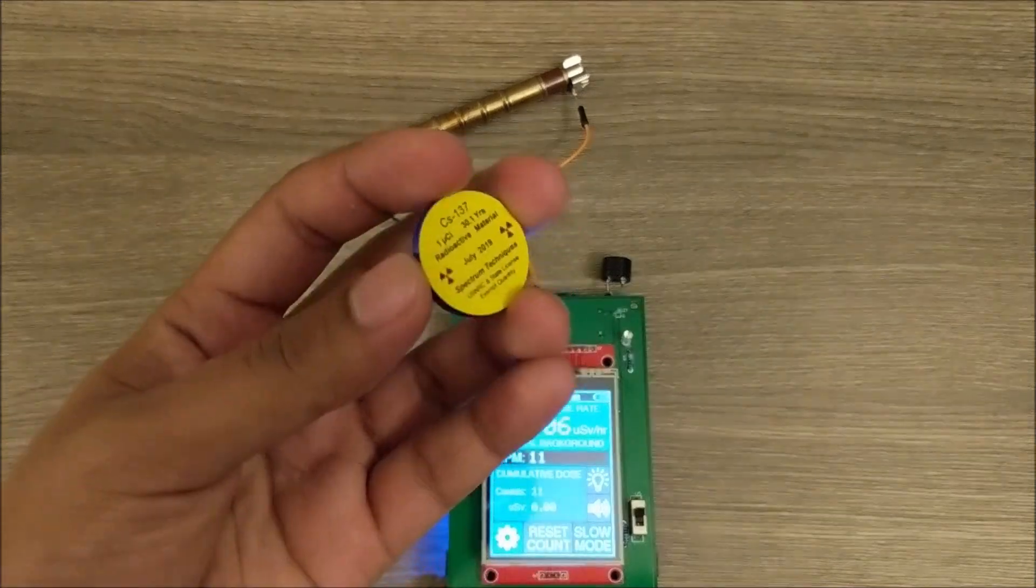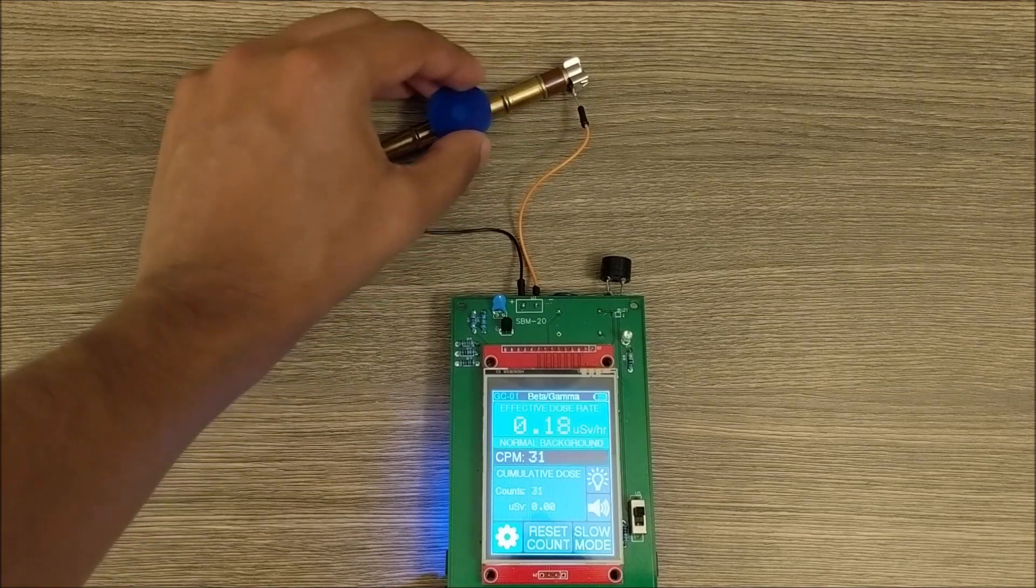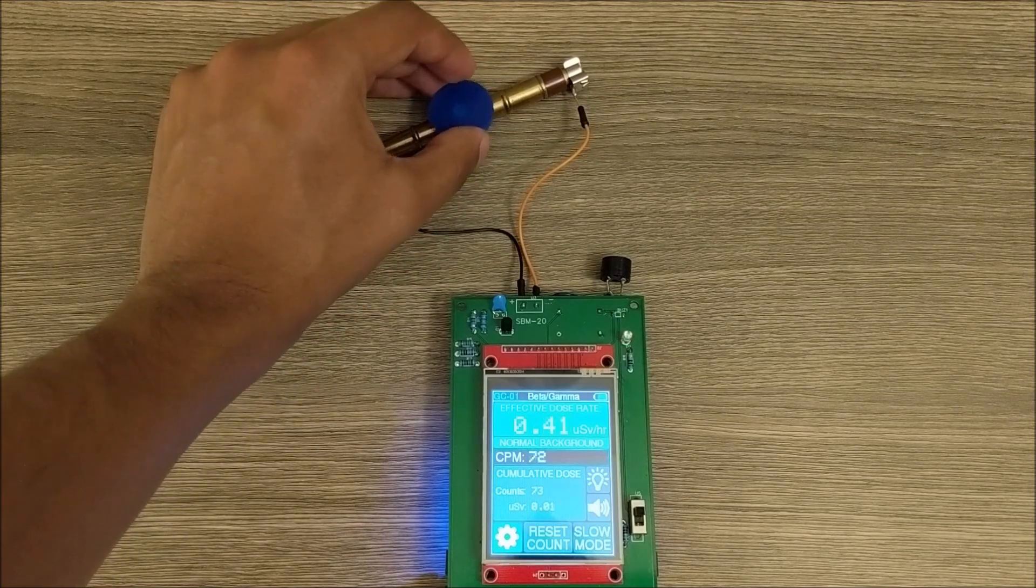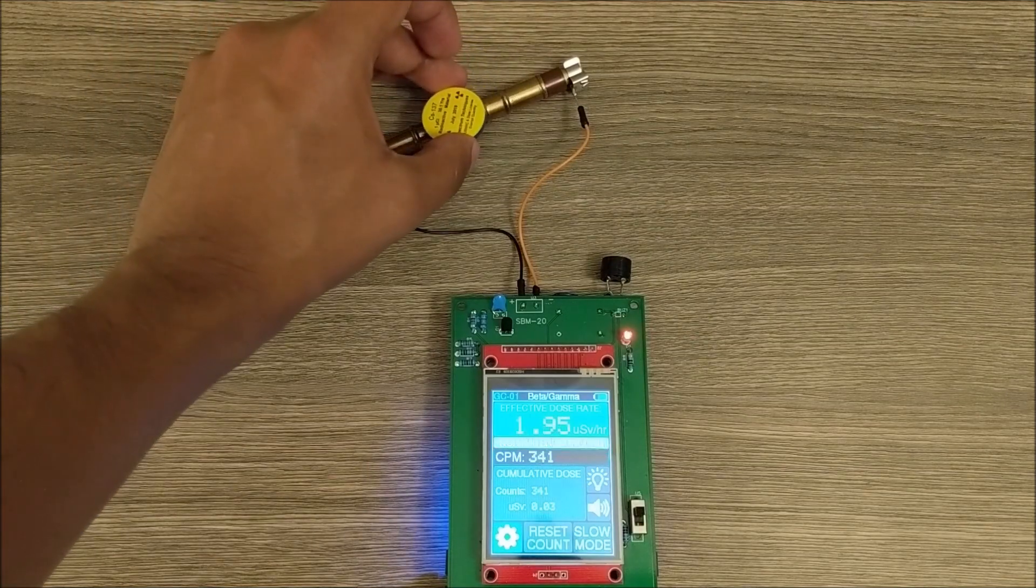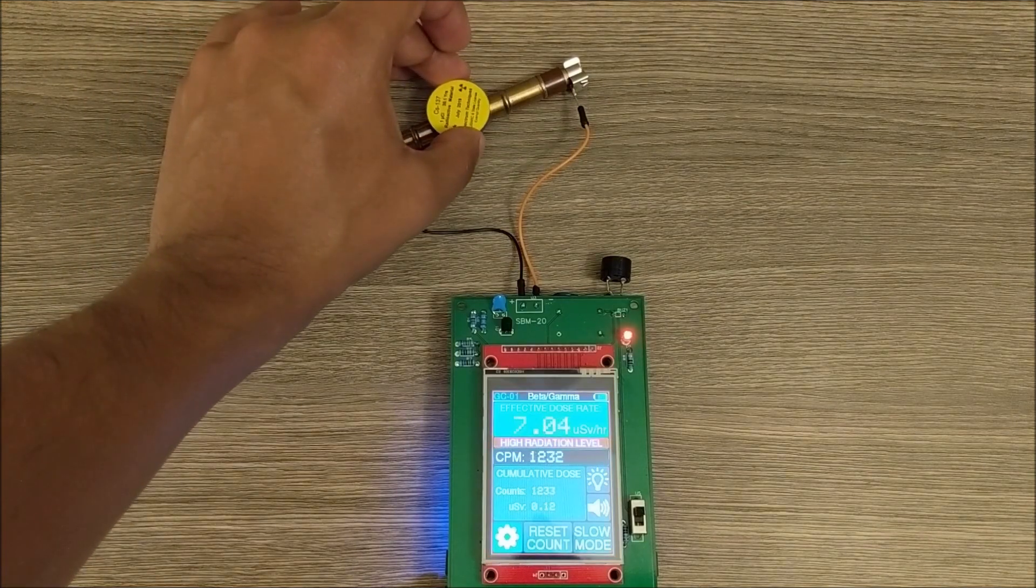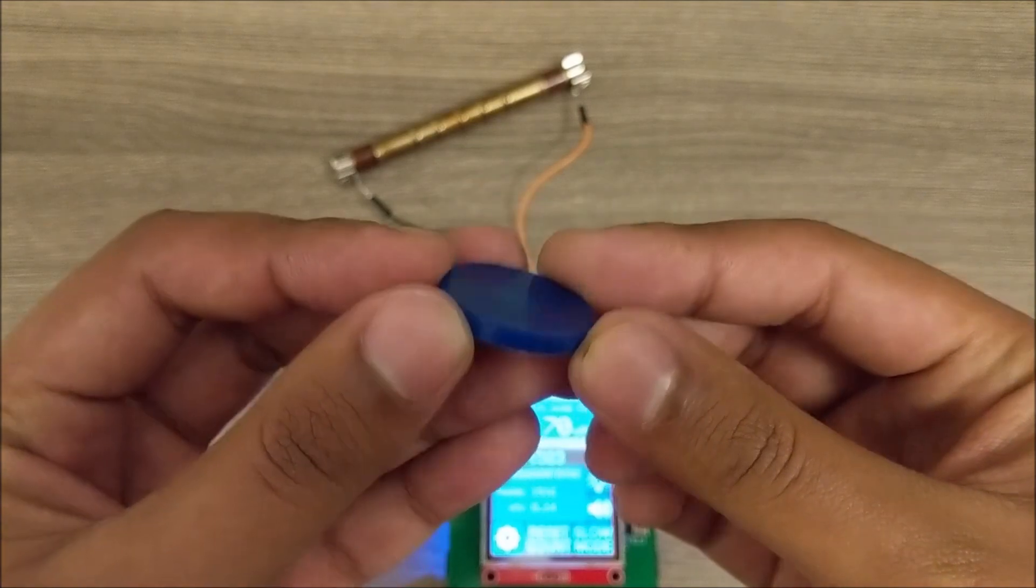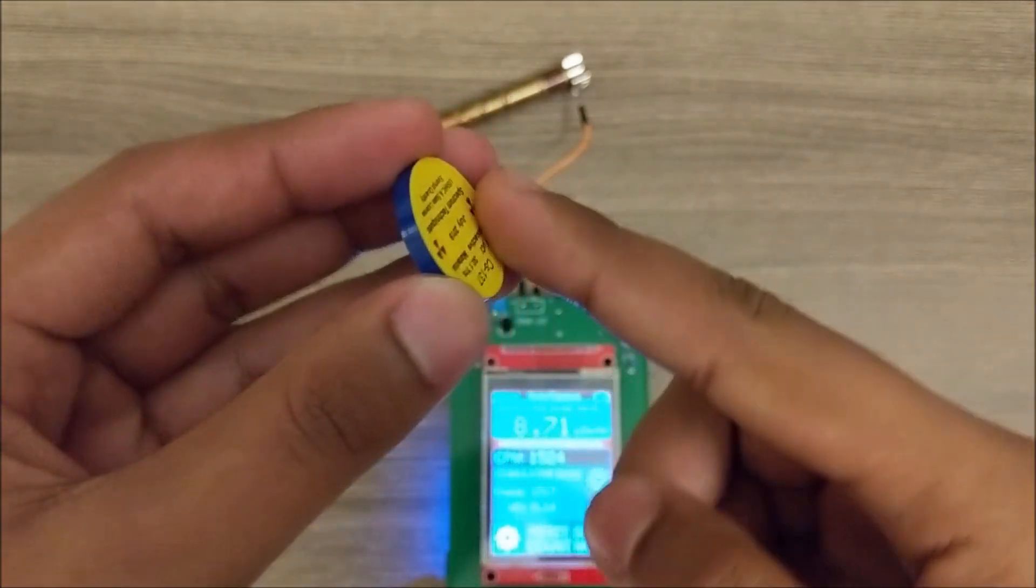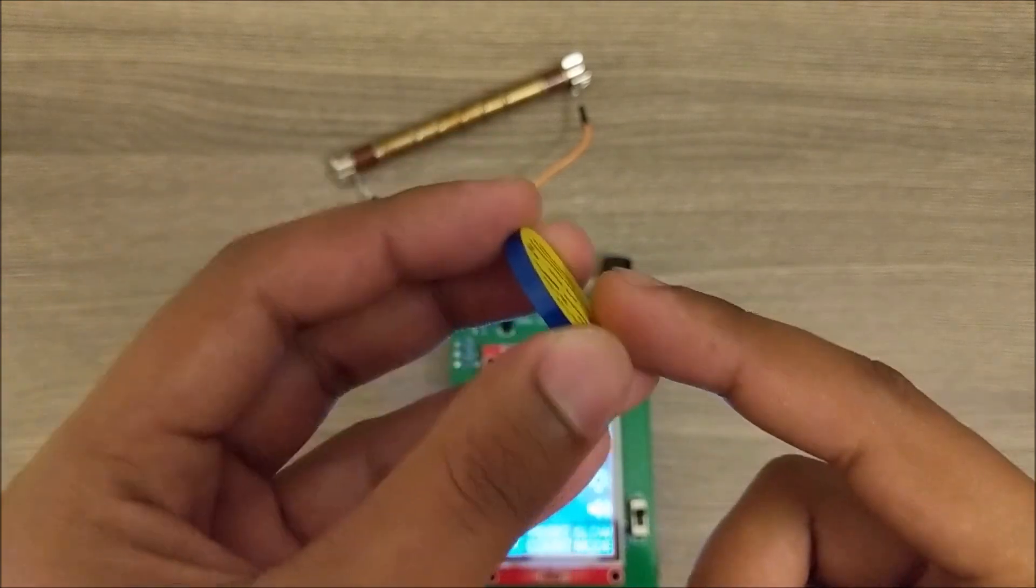Now if I bring it closer to the tube with the sticker side down, you'll notice that it picks up a lot of activity. What looks like what's happening is the sticker side is actually blocking most, if not all, of the beta particles, and then the bottom side is letting it through.